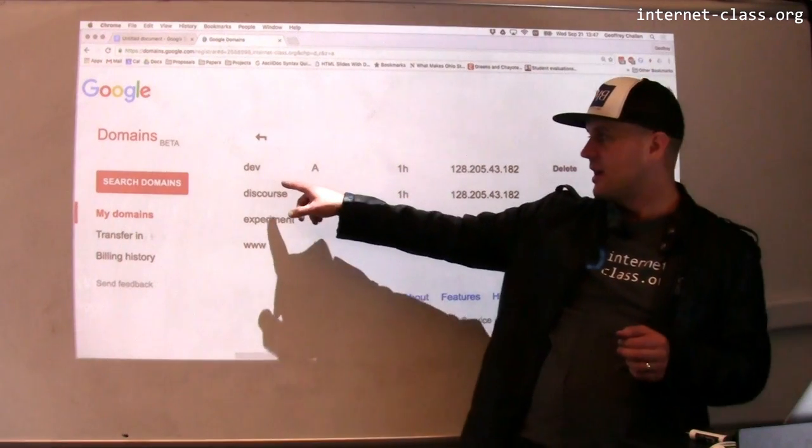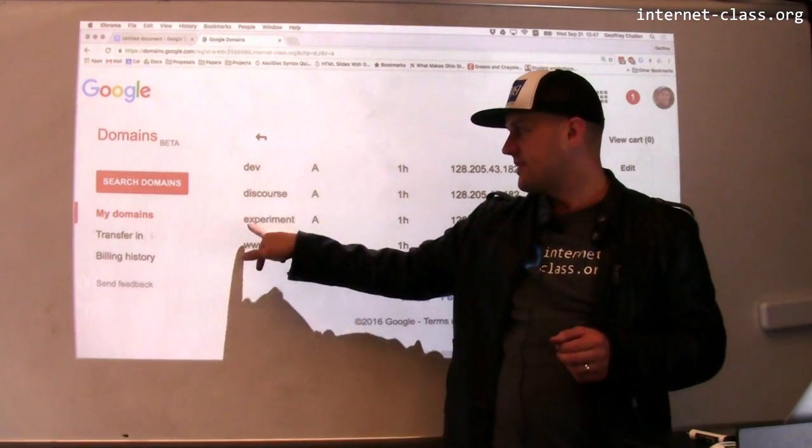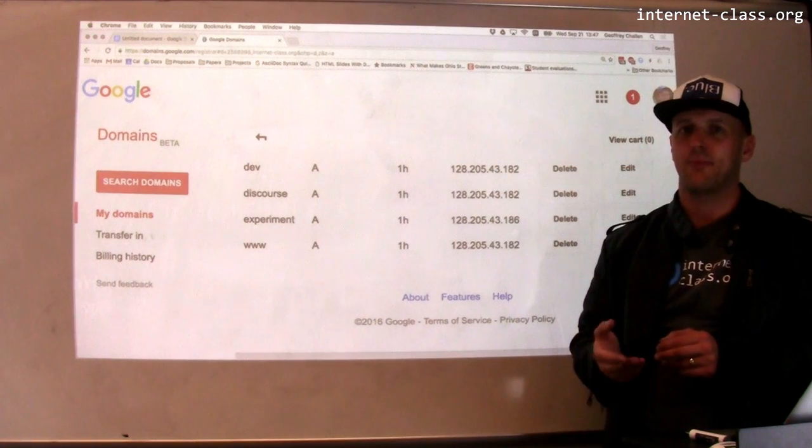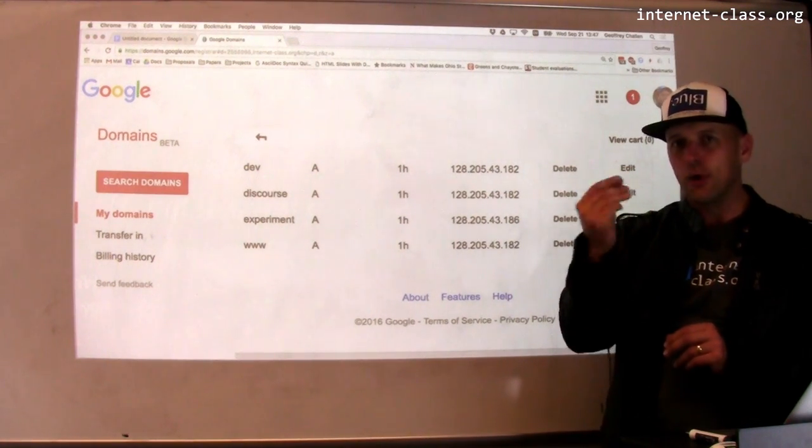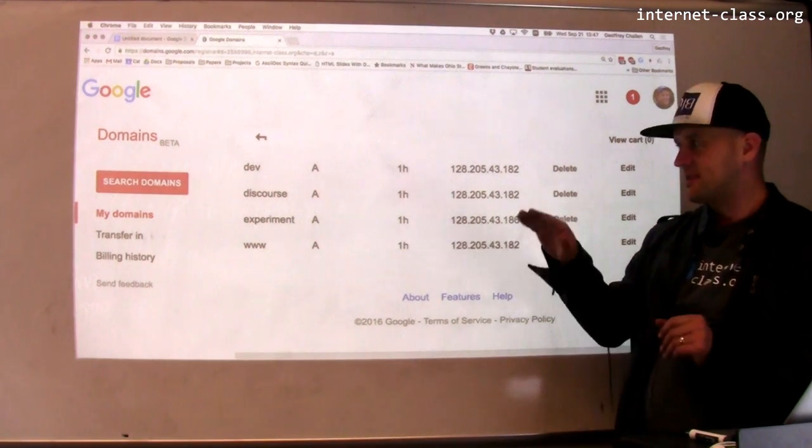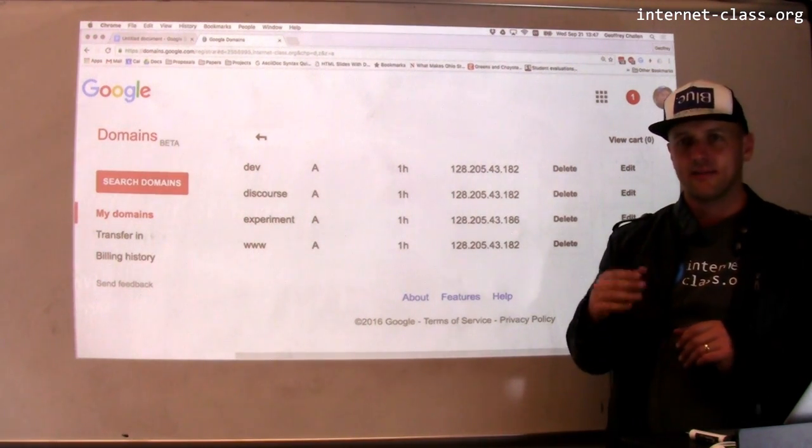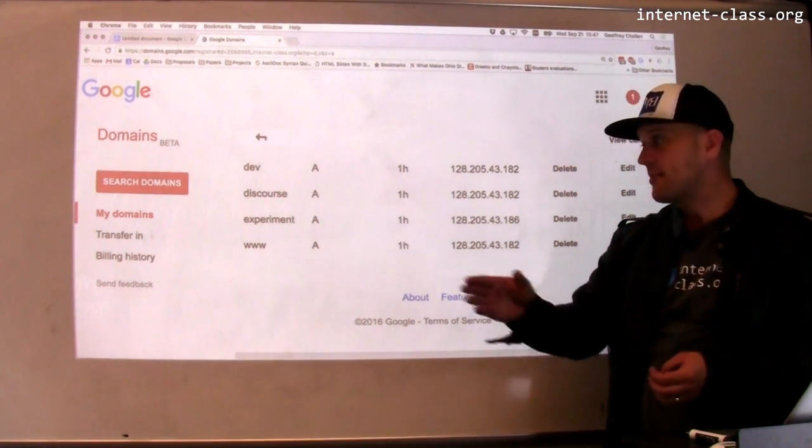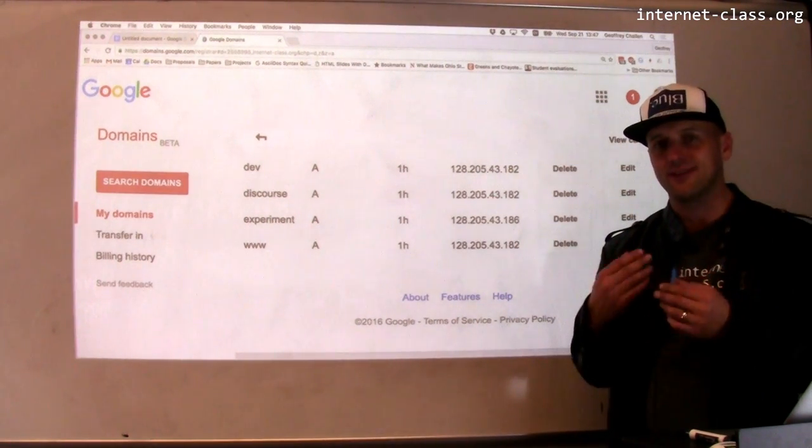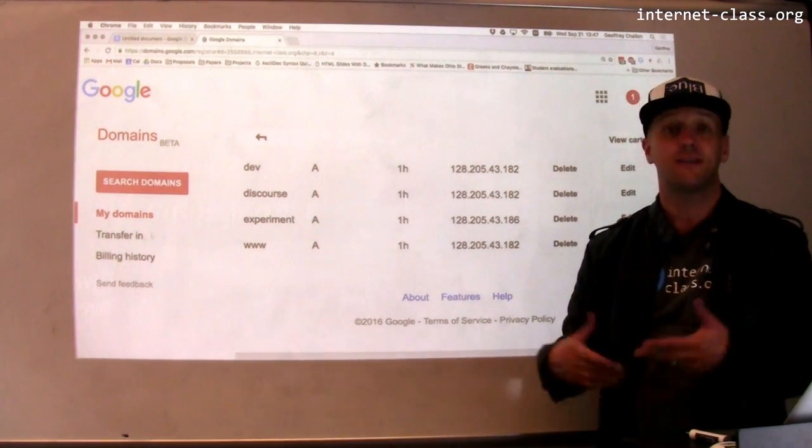But what's happening here is regardless of whether you go to dev, experiment, or www, you're communicating with the same web server. And what the web server is doing is it's looking at that host name that you send along with your request, and it's figuring out which site to serve you. So if you go to discourse.internetclass.org, you're actually visiting the same IP address. You're communicating with the same machine, but because you're asking for discourse as opposed to www, it sends you a different site.